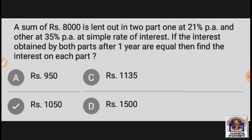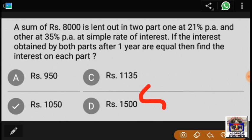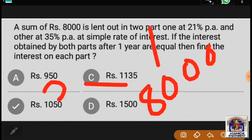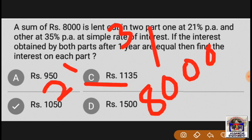Two economic interests — if the interests obtained by both parts after one year are equal, then find the interest on each part. We have these alternative possibilities if we replace there.